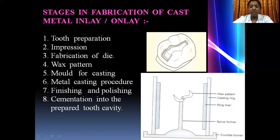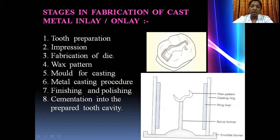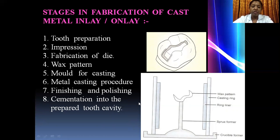Once cooling is completed, the casting is broken from the casting ring and taken out. Next, extra-oral finishing and polishing is done by the technician in the lab. Once done, you try the casting onto the tooth preparation in the patient's mouth, then cement the inlay or onlay using type 1 GIC luting cement. Final finishing and polishing is completed intraorally.